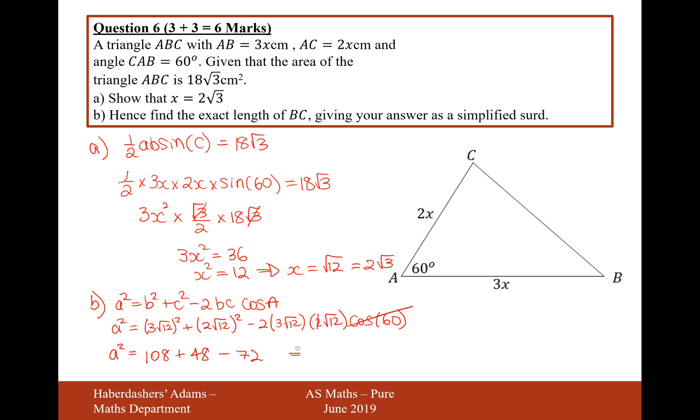And then we'll simplify all of this together. So it's going to be a squared equals, let's do it in the calculator so we don't make any mistakes. 108 plus 48 minus 72. That gives us 84.